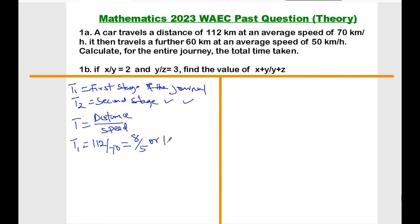Then the second journey is given to be 60 kilometers, divided by 50, and this will give us 6 over 5 or 1.2 hours. So the entire journey will now be...